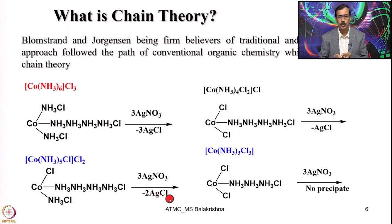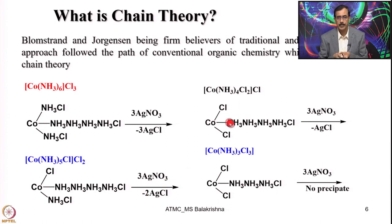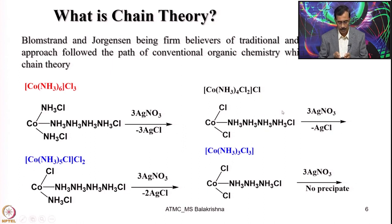In this case they got 2 chlorides coming out, so their hypothesis was looking convincing. Then when they went to the next compound, they wrote this structure and to their surprise, when treated with excess silver nitrate, they could get only 1 silver chloride precipitating out — again appearing to prove their chain theory.